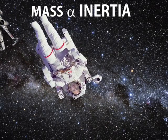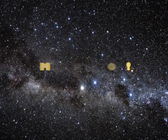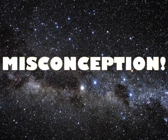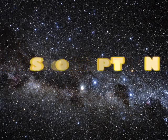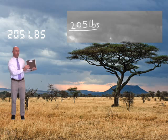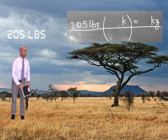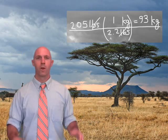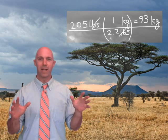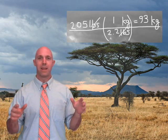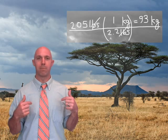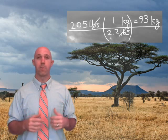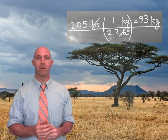The mass of an object is not going to change. This is a major misconception, so pay close attention. On Earth, my weight translates to about 93 kilograms in mass. A better way to say this would be that my 93 kilograms on Earth ends up weighing 205 pounds.